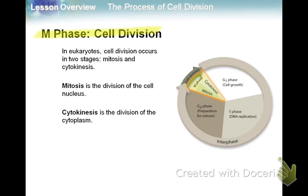There are two parts to the M phase: mitosis and cytokinesis. Mitosis is division of the nucleus, and cytokinesis is division of the cytoplasm.